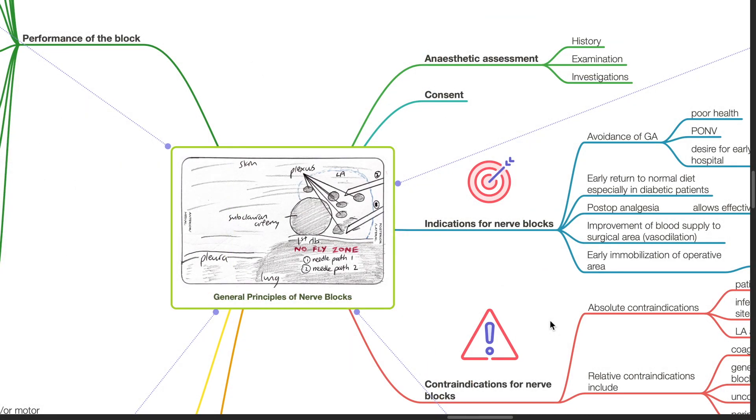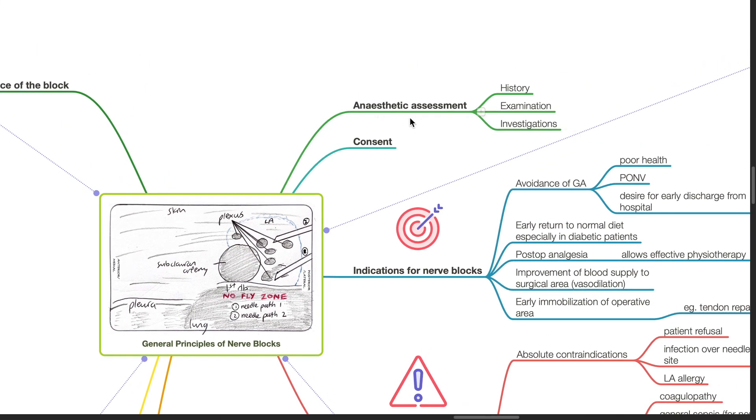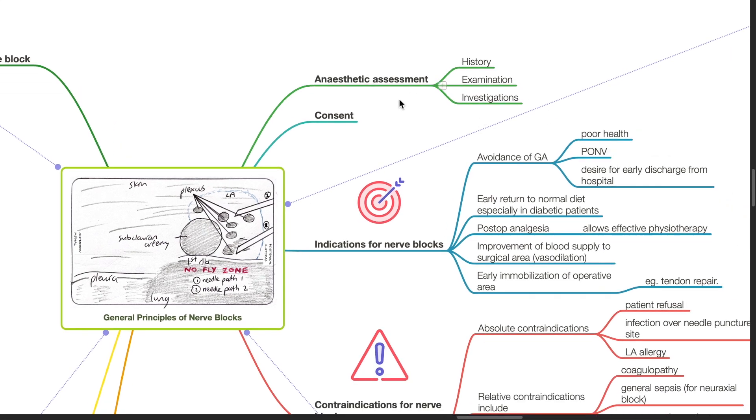General principles of nerve blocks. First, we should do a full anesthetic assessment which includes history, examination, and investigations, and obtain valid consent.